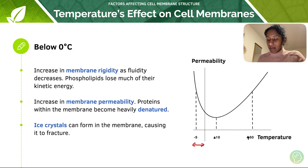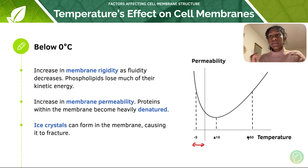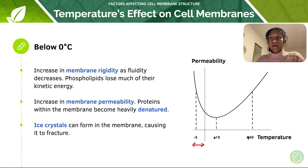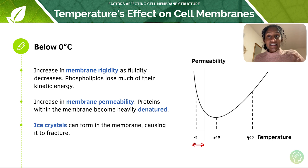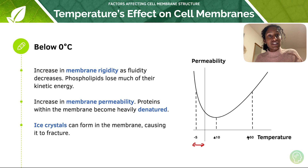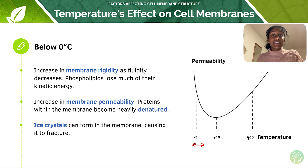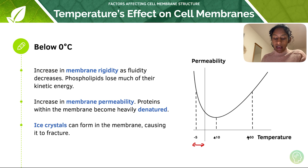Looking at this graph, temperature increases along the x-axis and permeability increases on the y-axis, so the graph shows how permeability changes with temperature. When we go below zero degrees, we get an increase in permeability because proteins within the membrane become heavily denatured at lower temperatures. The membrane gets denatured and becomes a bit leaky — holes form as proteins denature, resulting in increased membrane permeability. Also, below zero degrees, ice crystals can form in the membrane, causing it to fracture.